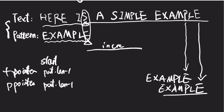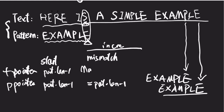How do we increment? Every time we find a mismatch, for the pattern pointer it's pretty easy — we switch to the rightmost position, so that increment equals pattern.length minus one. For the text pointer, we have the good suffix rule and the bad character rule. Because we want to skip as many positions as possible, we choose the max of bad character rule and good suffix rule, and increment by that max value.